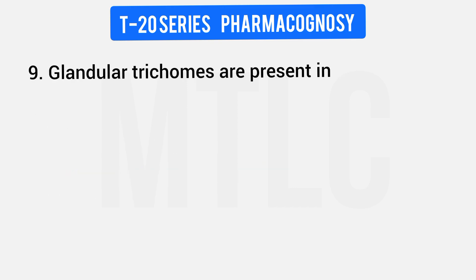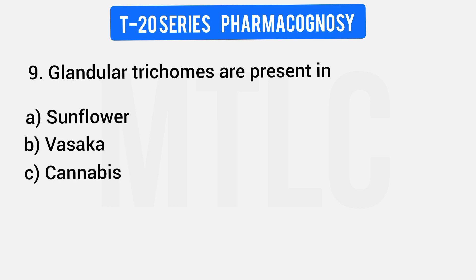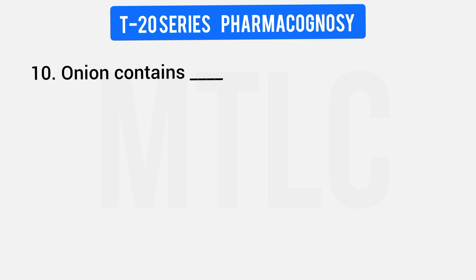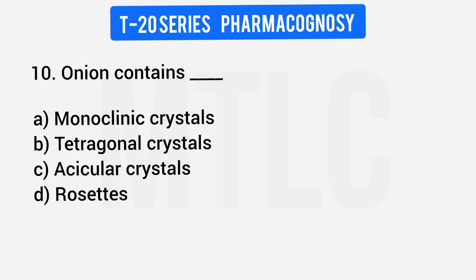Question 9: Glandular trichomes are present in which plants? Options: Sunflower, Vasaka, Cannabis, All the above. All three plants have glandular trichomes, so the answer is all the above. Question 10: Onion contains which type of calcium oxalate crystals? The answer is tetragonal calcium oxalate crystals.